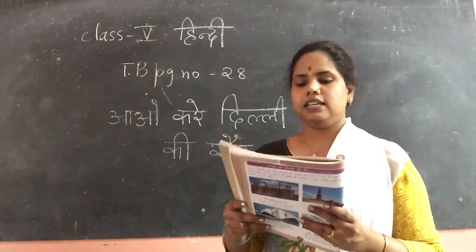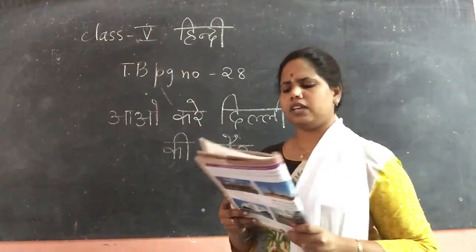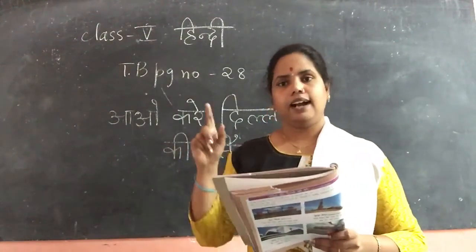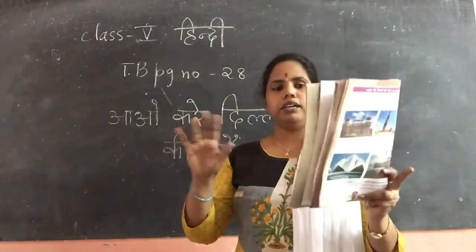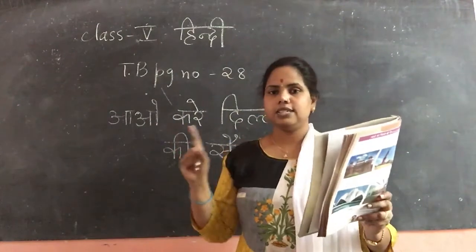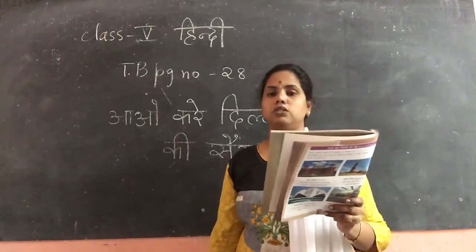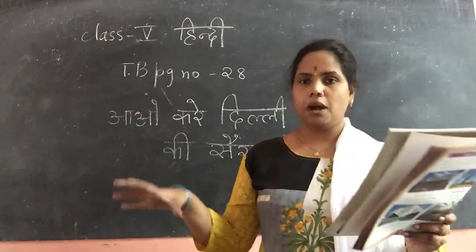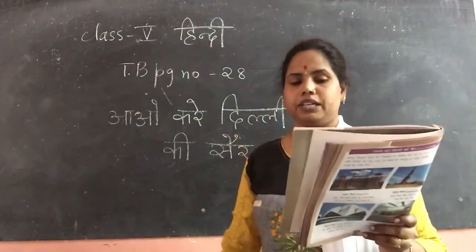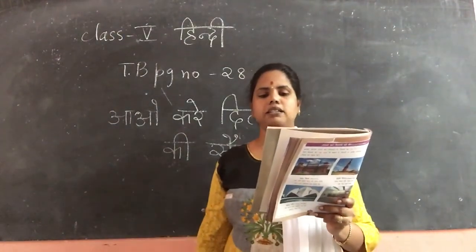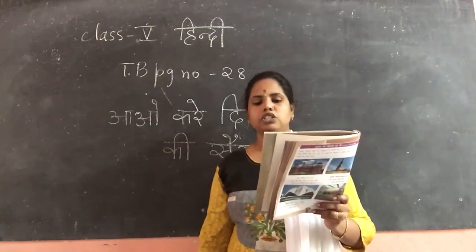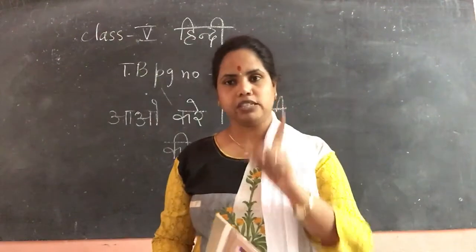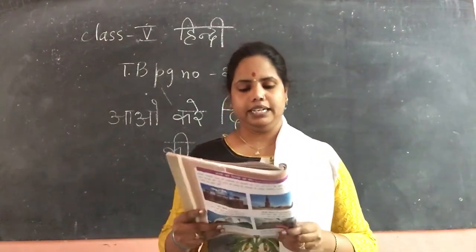Next is Humayun ka Maqbara — Humayun's Tomb. Humayun was a king and Maqbara is a kind of palace or tomb — we can also call it a Tom or Samadhi. Yeh imarat Bharat mein pratham Mughal shaili ka udaharan hai. This building is an example of the first Mughal architecture in India.